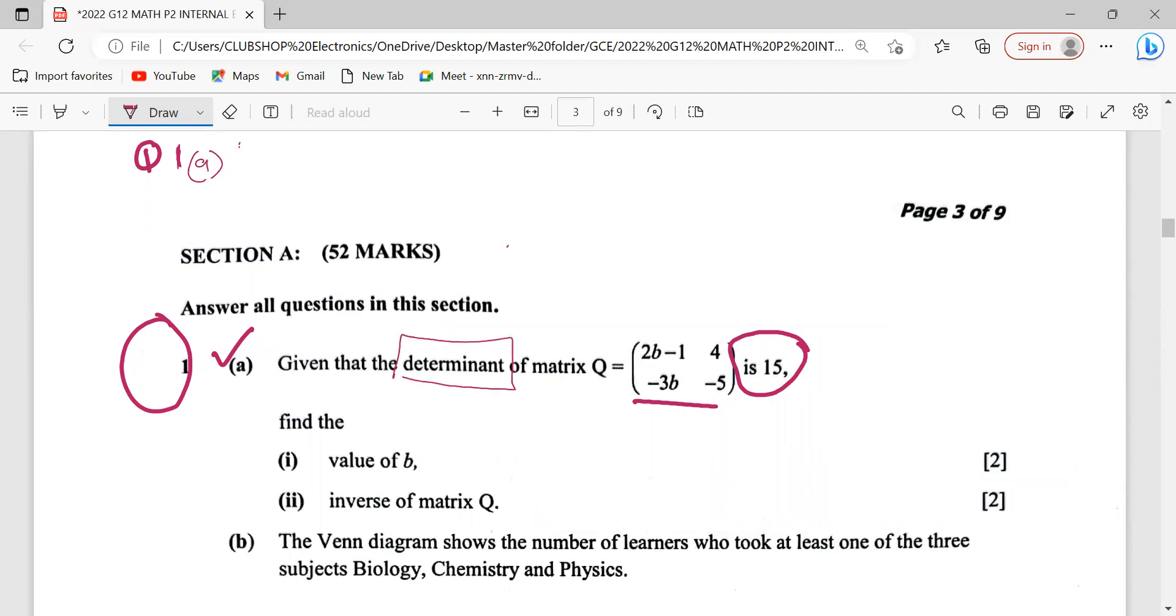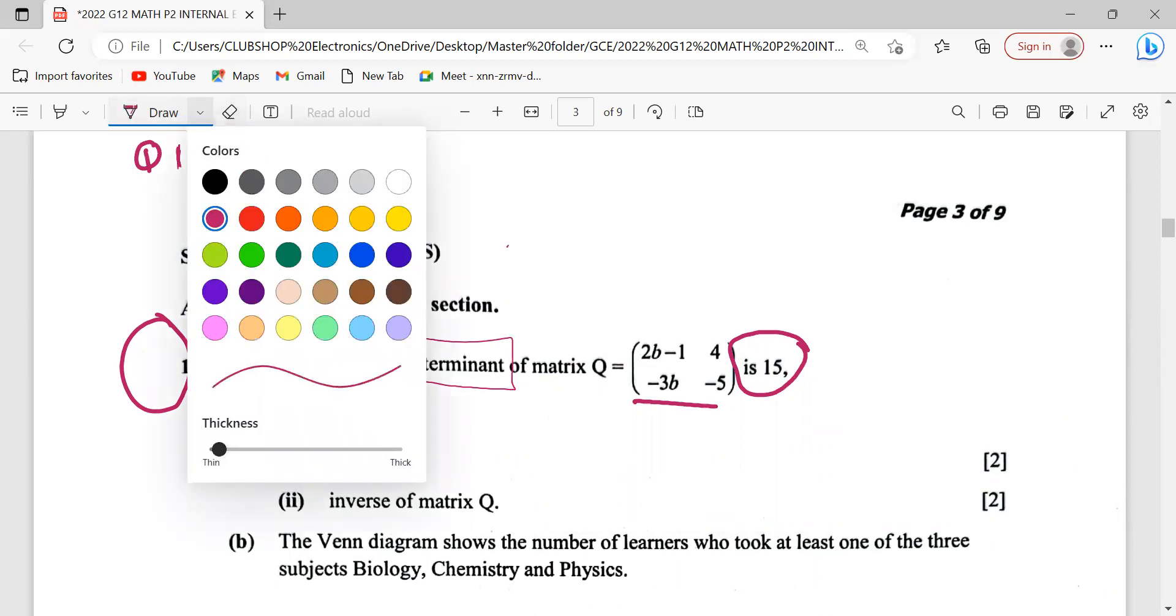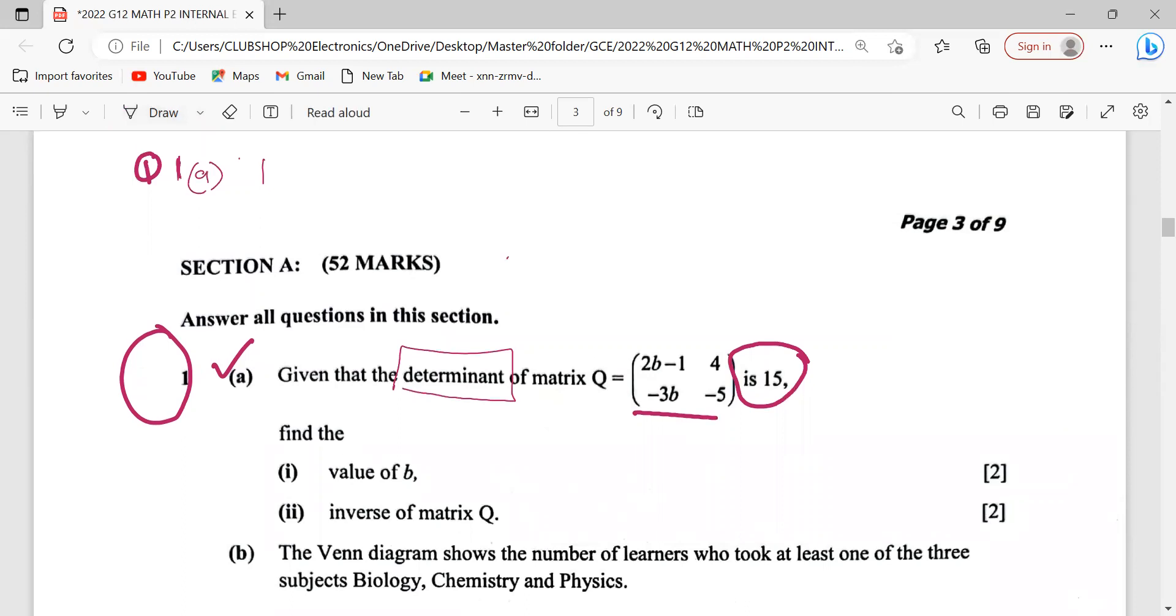Determinant of Q is defined as the product of this diagonal minus the product of that diagonal. In this regard, what does it mean? We need to multiply negative 5 by 2b minus 1.